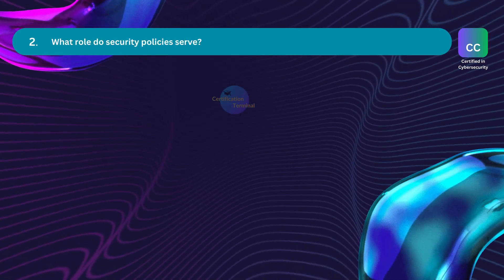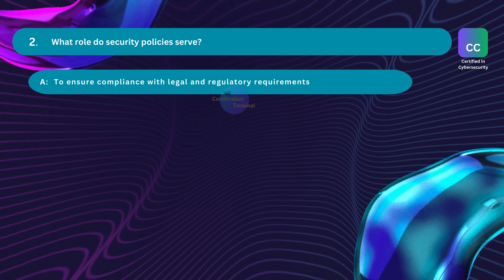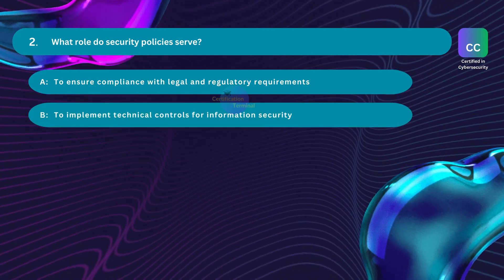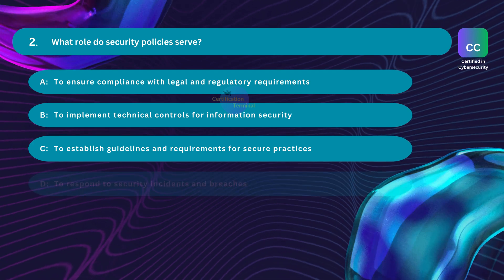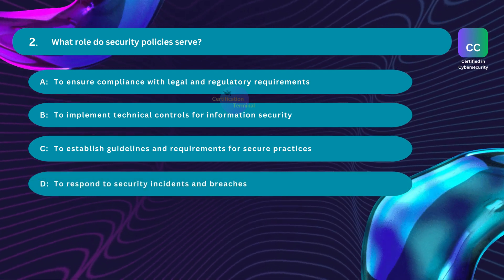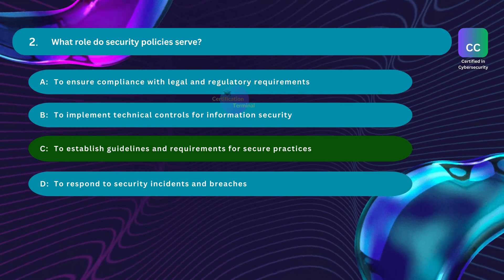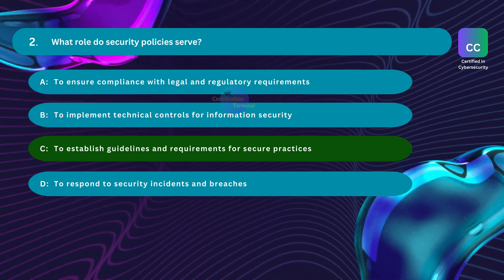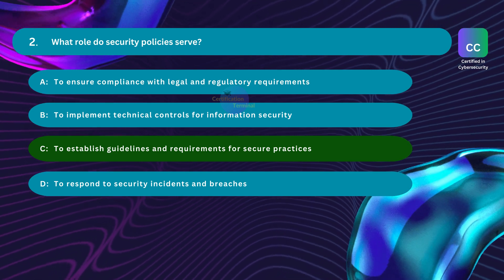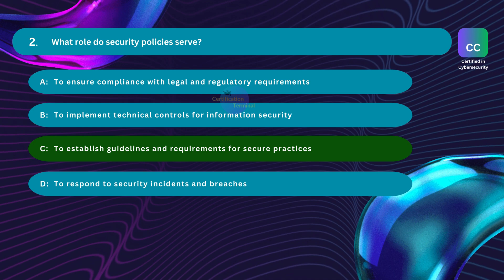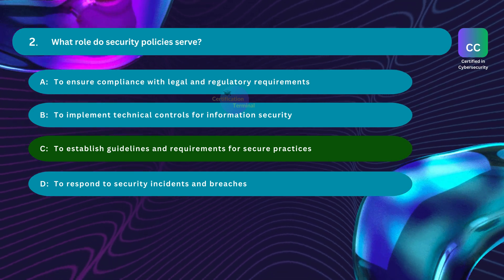Question number two: What role do security policies serve? Option A: to ensure compliance with legal and regulatory requirements. Option B: to implement technical controls for information security. Option C: to establish guidelines and requirements for secure practices. Option D: to respond to security incidents and breaches. The correct answer is Option C. Security policies serve as foundational documents that delineate the principles, practices, and protocols governing an organization's approach to safeguarding its information assets, creating a structured framework for maintaining robust security measures.